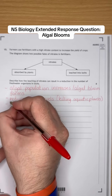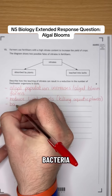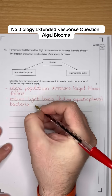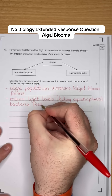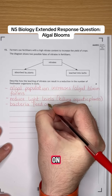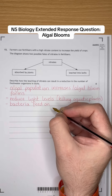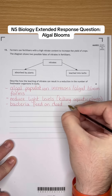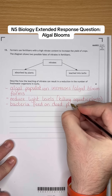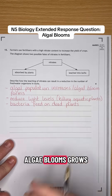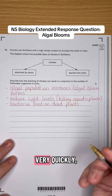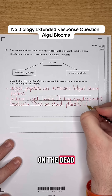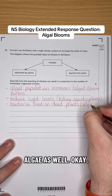Because these plants are now dead, bacteria are going to feed on these dead plants. And because the algal bloom grows very quickly but also dies very quickly, they'll also feed on the dead algae as well.